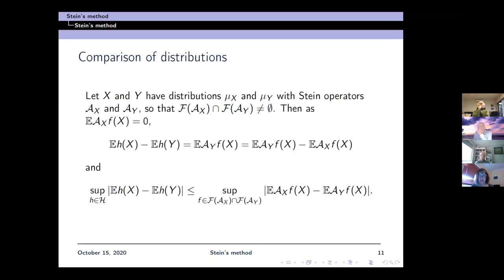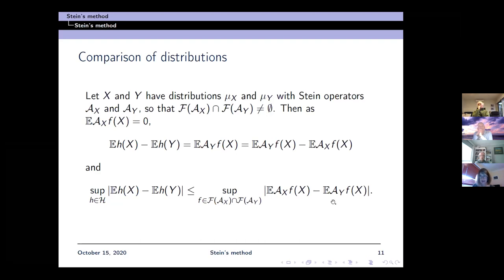To make this more explicit, if we have two distributions mu x and mu y with Stein operators A x and A y, and x has distribution mu x, y has distribution mu y, and there are functions on which both operators are defined, then for the Stein operator we have expectation A x f of x equals zero. So the expectation h of x minus expectation h of y equals the expectation A y f of x, but we can also subtract the expectation of A x f of x without harm. The supremum over all h in our class of test functions of the difference expectation h of x minus expectation h of y is less than or equal to the supremum over all f in the support of these operators of expectation A x f of x minus expectation A y f of x.